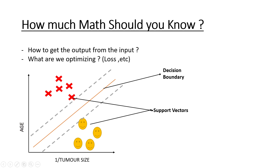How much math should you know? In any machine learning model you should understand: (a) how you're getting the output from the input — meaning, once you have a decision boundary and a random point, how do you determine which side of the boundary that point lies on? That's what happens internally every time you call model.predict. (b) What are we optimizing? You need to know this because it's the factor that decides which model is better — there's always some equation you're trying to maximize or minimize.